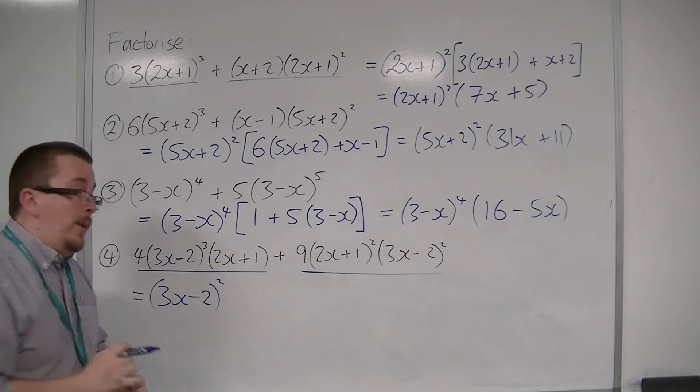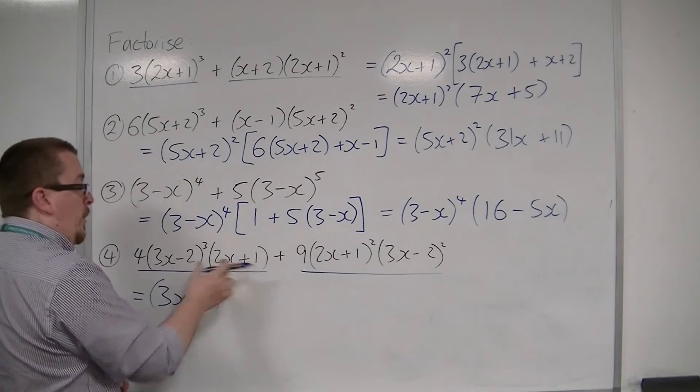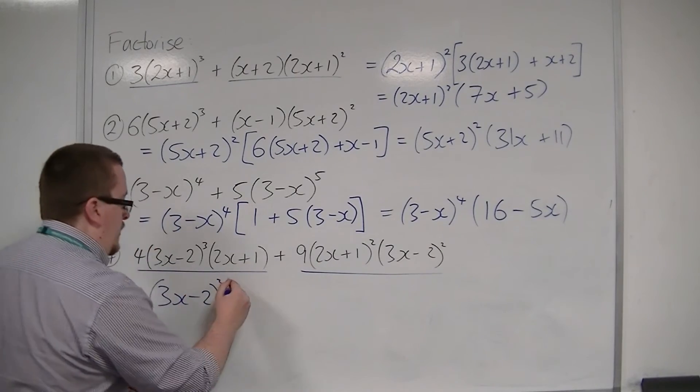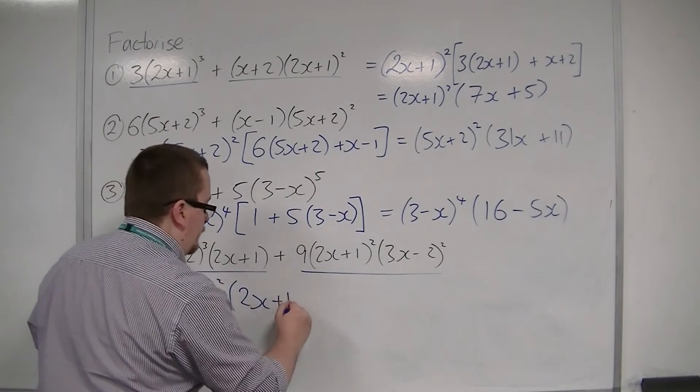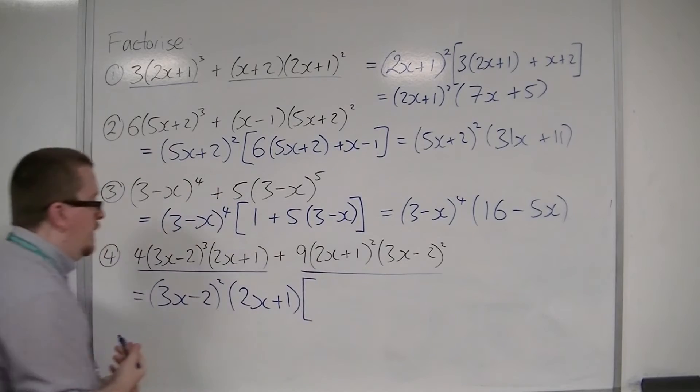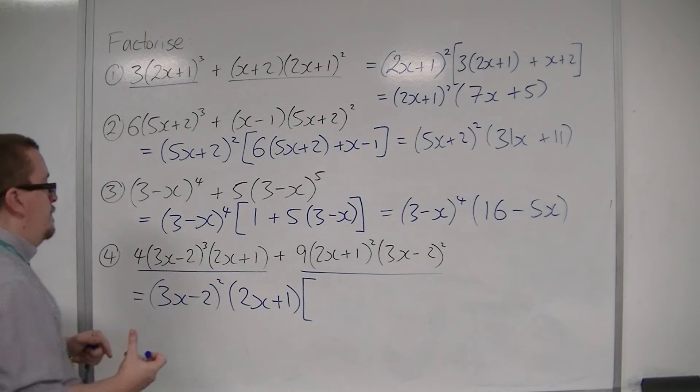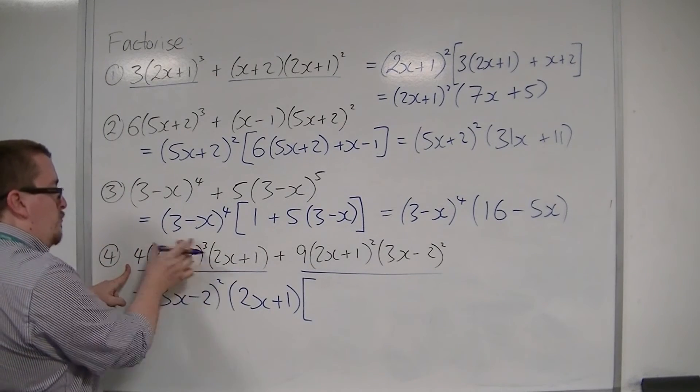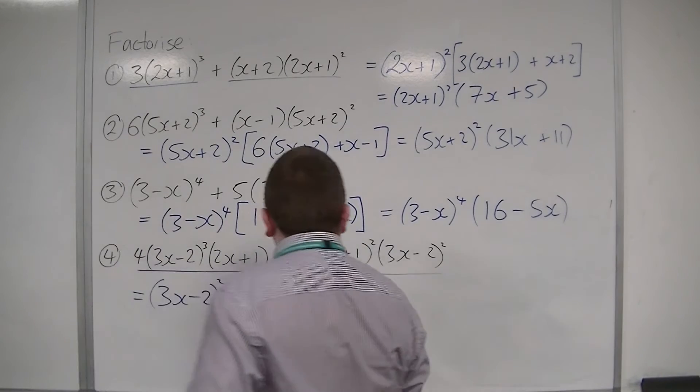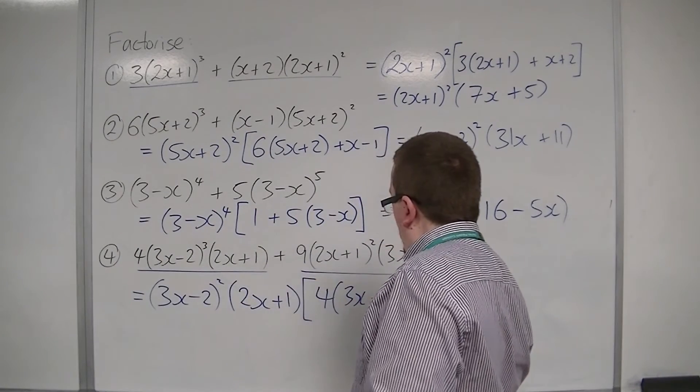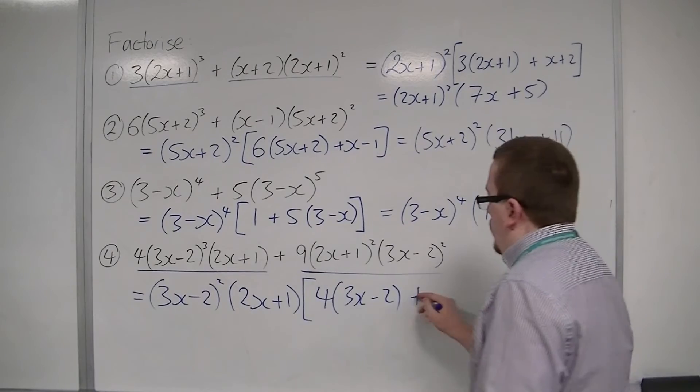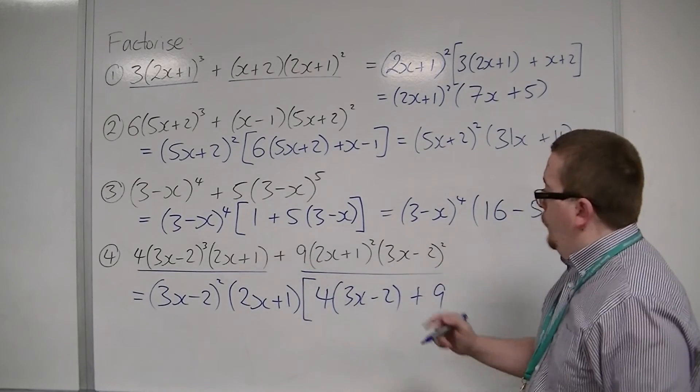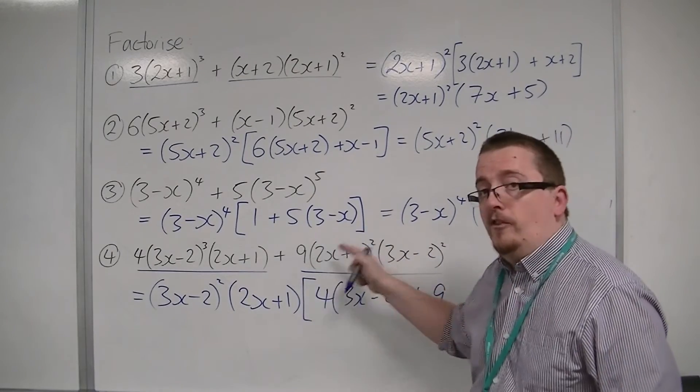Both of them also have 2x plus 1. This one has 1 of them, this one has 2 of them. So, I can pull one of them out. What's left is I've got 4 lots of the remaining 3x minus 2 there, and then I've got 9 lots of the remaining 2x plus 1.